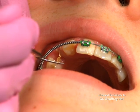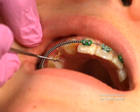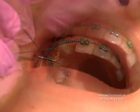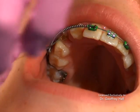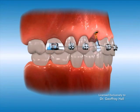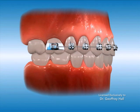Then a small orthodontic chain is attached to the bracket on the impacted tooth and connected to the arch wire and other braces on the opposing teeth. Force created by the chain gently pulls the tooth out of its impacted state to the point where the arch wire can be attached to the bracket, drawing the tooth further into its intended position.